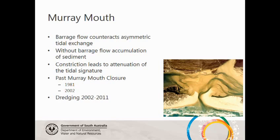The Murray Mouth openness is determined by the forces which act on it: wave energy, tide, barrage flows, and sediment composition. Beach sand is the main source of sediment deposited in the Murray Mouth. Without any flow from the barrages, the tide is naturally asymmetric. This means there is a higher velocity on the flood tide than on the ebb tide, so sediment is deposited on the flood tide, and on the ebb tide the velocities are lower, meaning that sediment is resuspended and not taken back out.